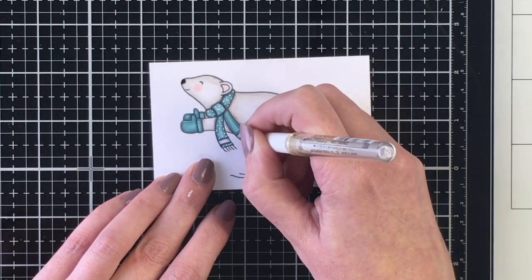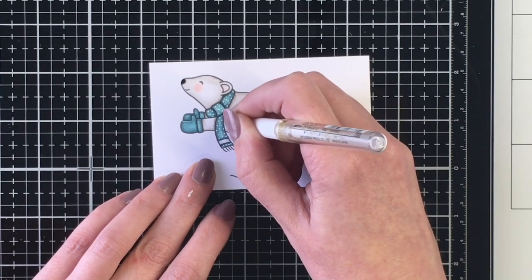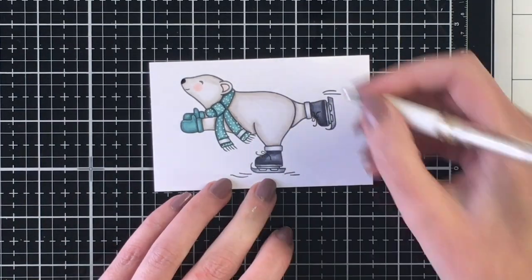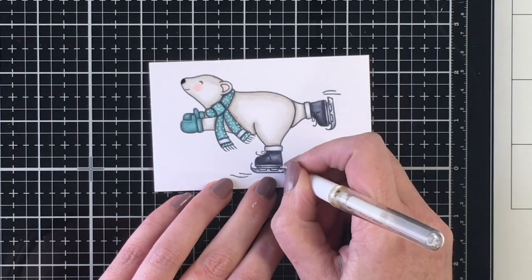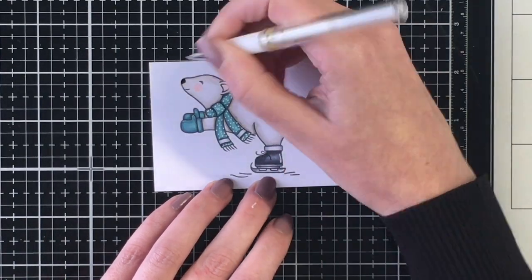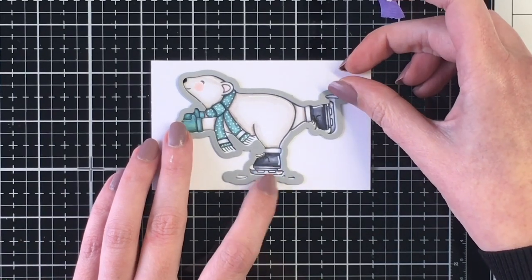Once I get all these dots onto the scarf, I am going to add a few highlights to our polar bear, mostly on his skates, and then a highlight line on his back and the top of his head. Then we can go ahead and use the coordinating die and run that through the die cut machine.